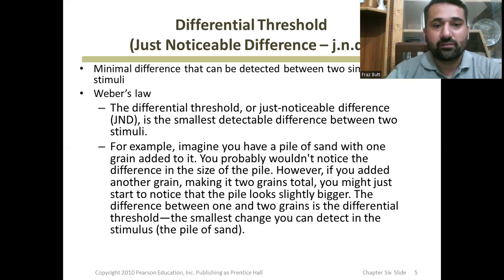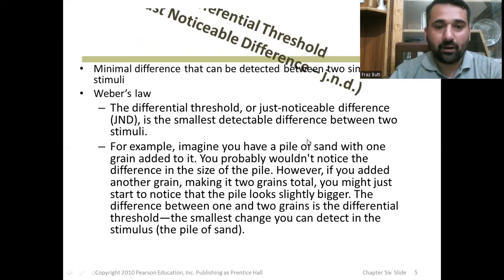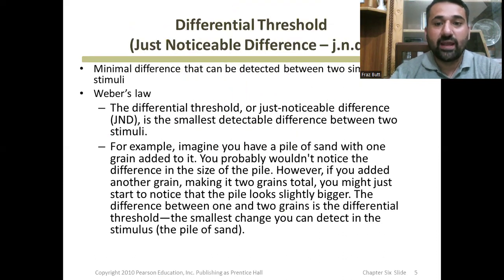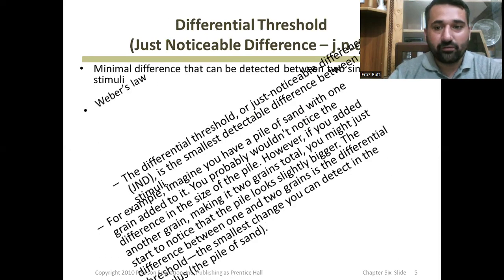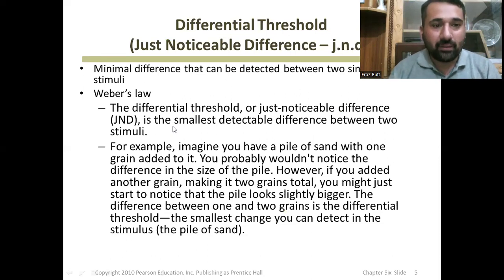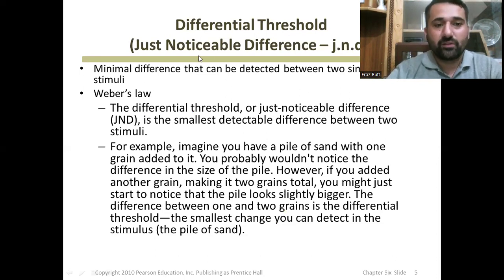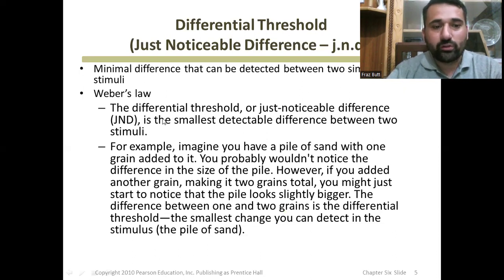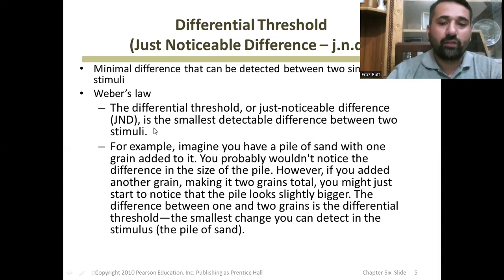The third element is differential threshold. There is a very important concept called JND — Just Noticeable Difference — which is the minimal difference that can be detected between two stimuli. Weber's Law explains this concept: the differential threshold, or JND, is the smallest detectable difference between two stimuli.